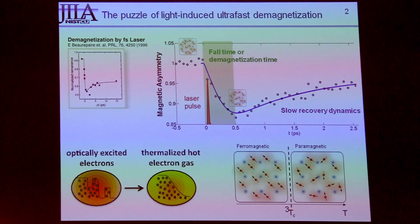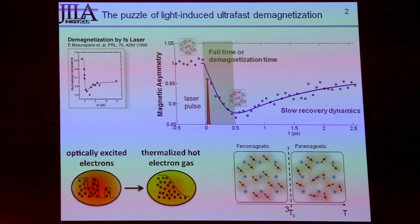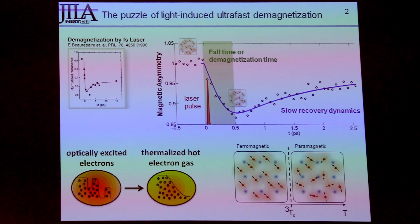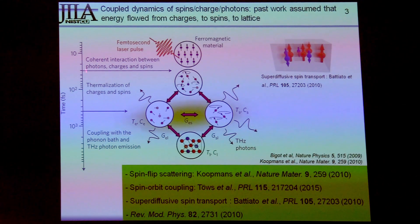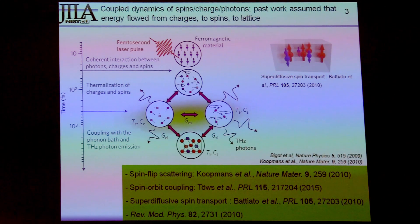The generally accepted way that people try to model the system — first introduced in the paper by Beaupere — is to treat the electrons as a hot electron gas. The energy first goes to the charges, and then it cascades down into the magnetic system, and then the phonons. A femtosecond laser pulse immediately excites the charges. There's some fast process at the beginning that we're not sure about. Then later, we have disorder of the magnetic moments, and spin-orbit coupling causes the angular momentum to get dissipated into the lattice, and we lose the magnetic order.